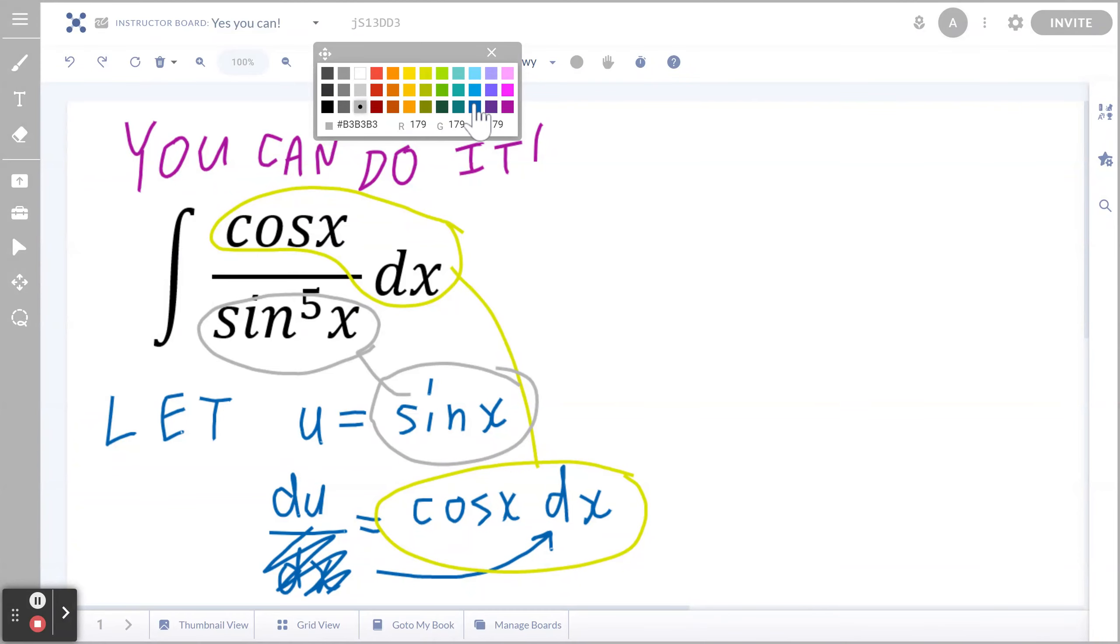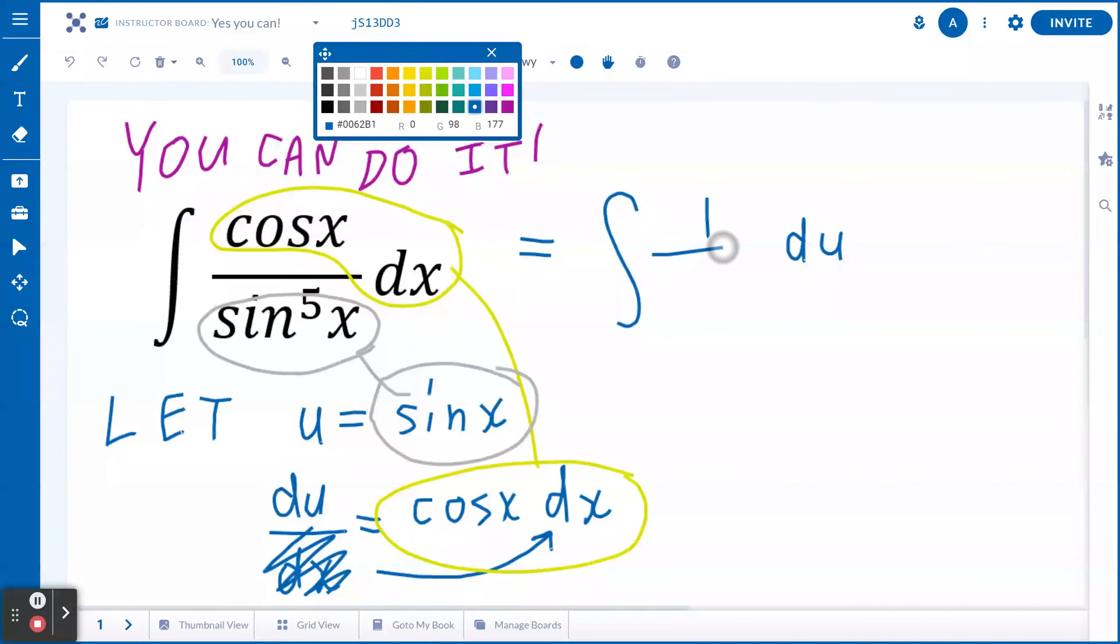So what this means is if you go back to the beginning, you can express the entire question as the antiderivative of, instead of cosine x dx, it's going to be du. Instead of 1 divided by sine x to the power of 5, it's going to be 1 divided by u to the power of 5.